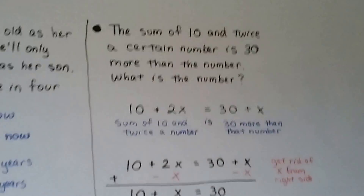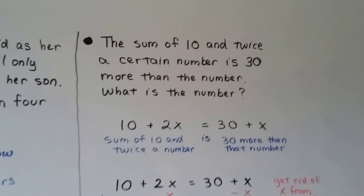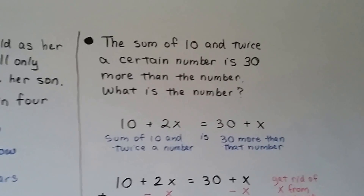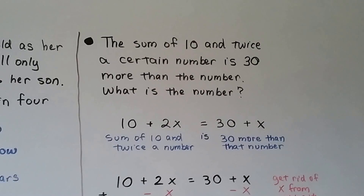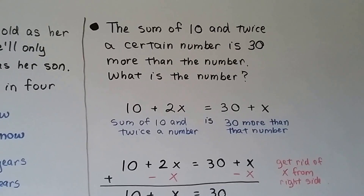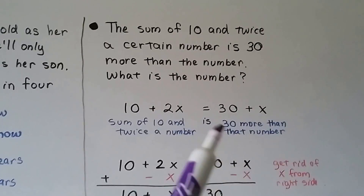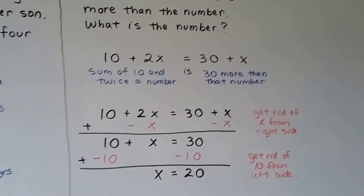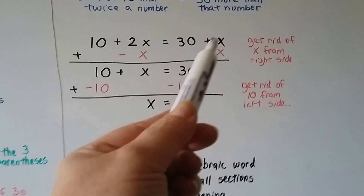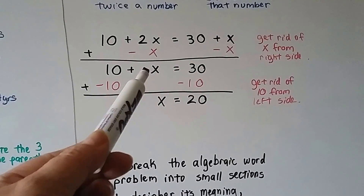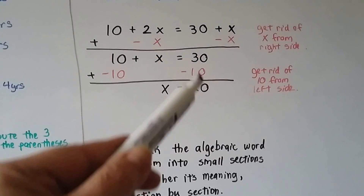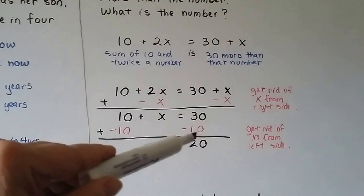Here's another one that seems confusing but breaks down into small parts. The sum of 10 and twice a certain number is 30 more than the number — what is the number? 'Sum' means addition, 'twice a certain number' is 2x, so we have 10 plus 2x equals 30 plus x. We add negative x to both sides, giving 10 plus x equals 30. Adding negative 10 to both sides, x equals 20. The number is 20.